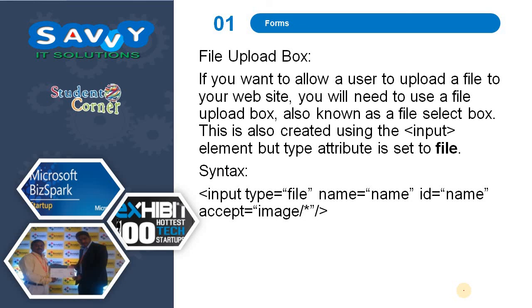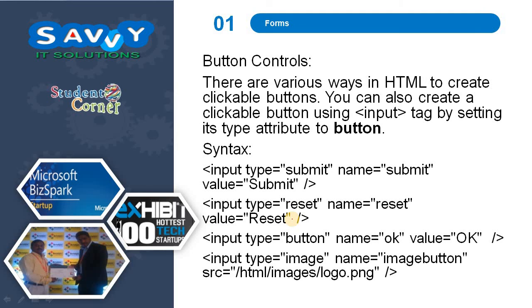File upload box: if you want to allow a user to upload a file to your website, you will need a file upload box, also known as a file select box. This is also created using the input element but the type attribute is set to 'file'. If it accepts only images, then we specify that. Button controls: there are various ways in HTML to create clickable buttons. You can create a clickable button using the input tag by setting its type attribute to 'button', and you can also directly use reset button images.